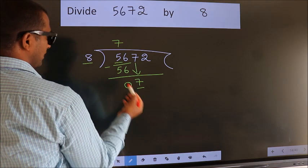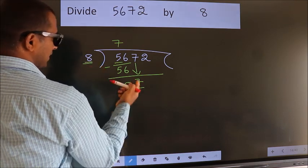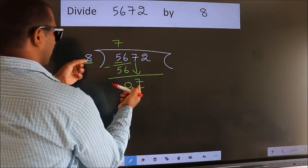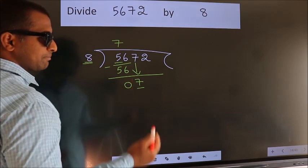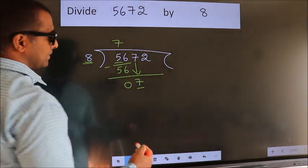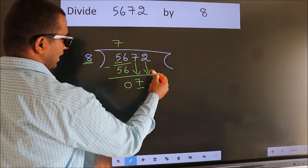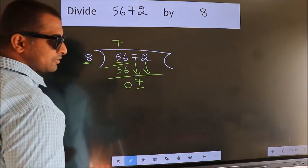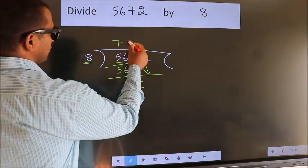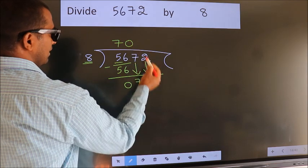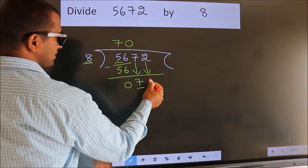Here we have 7. Here 8. 7 is smaller than 8, so we should bring down the second number. And the rule to bring down the second number is put 0 here.